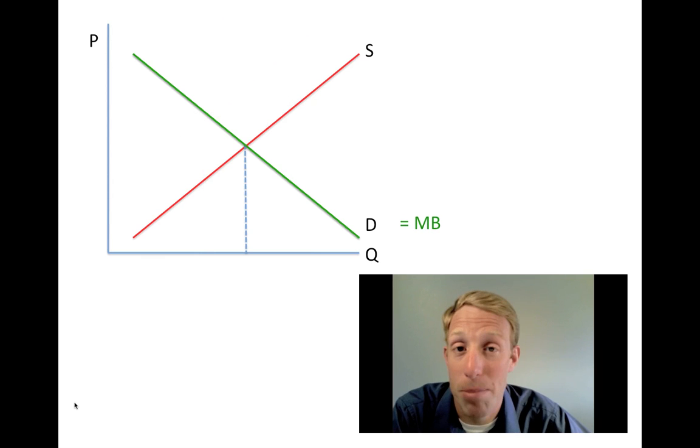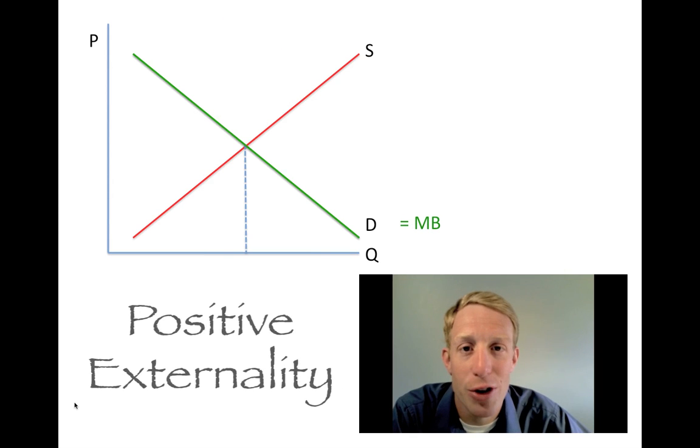Now, there could be positive externalities. This occurs when somebody does something really great, and other people benefit from it. Now, the problem for the producer of the externality is that they don't get compensated for their work.